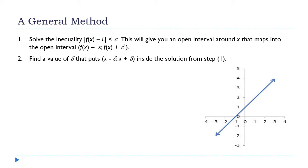The method goes like this. We're going to start with this inequality: |f(x) - L| < ε. We're going to know what f(x) is — that's our function — and we're going to know what L is. We'll have some number that we're pretty sure is the limit, and we're looking to show that it is.